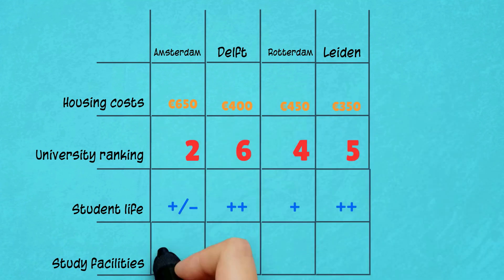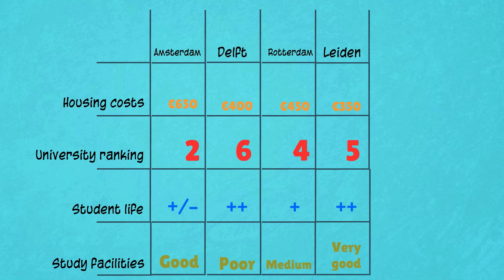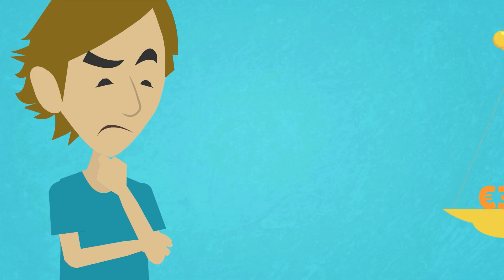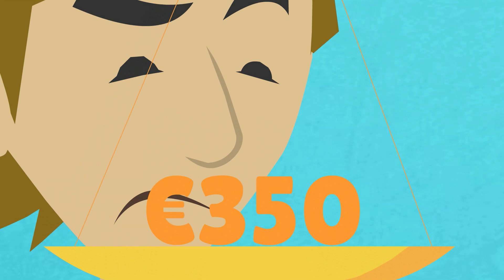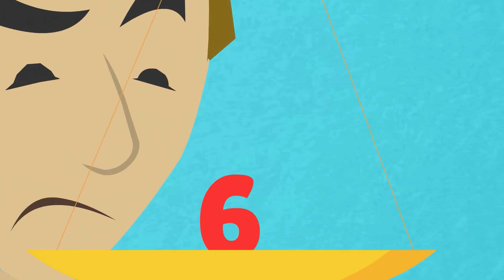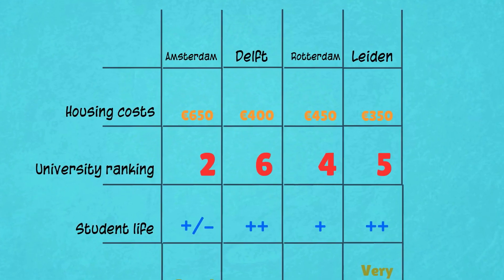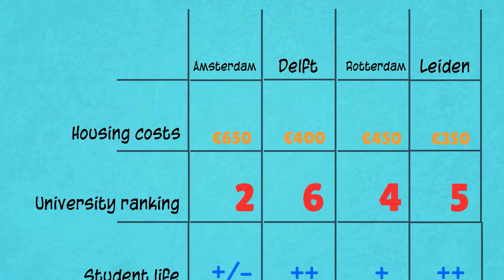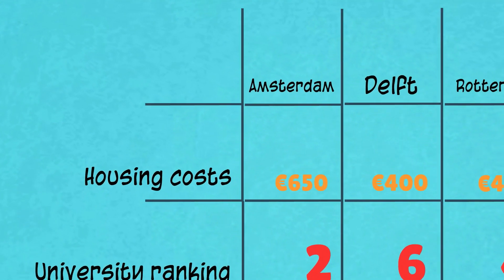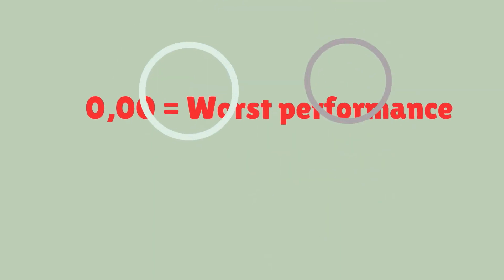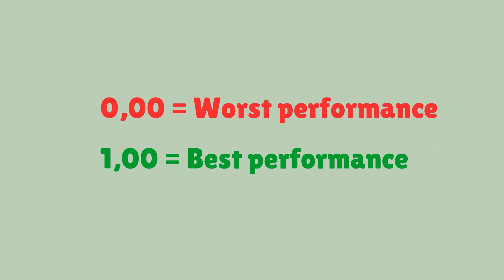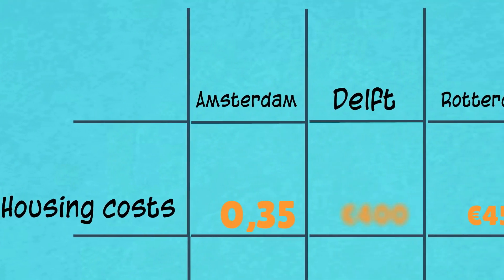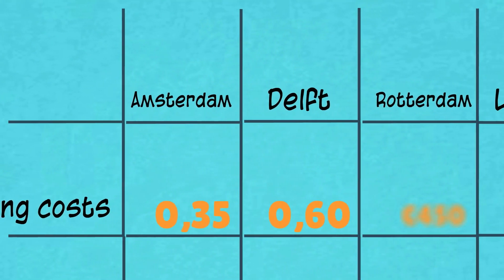The next step is standardisation. In order to be able to compare and combine the different scores, they need to be displayed on a comparable scale. The criteria of housing costs are difficult to compare with university ranking. Standardisation portrays these criteria on a new, similar scale that is between 0 and 1. 0 is given to the worst performance and 1 to the best. Once the criteria are standardised, they no longer have a unit.